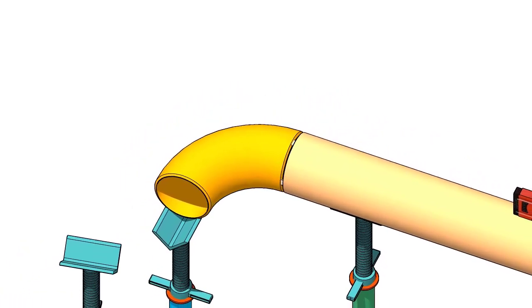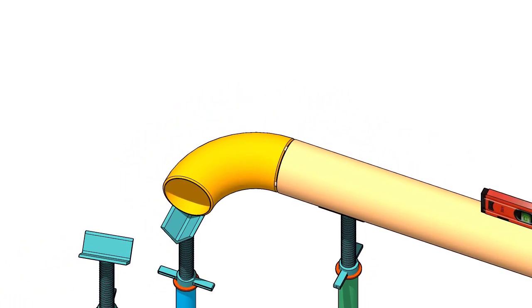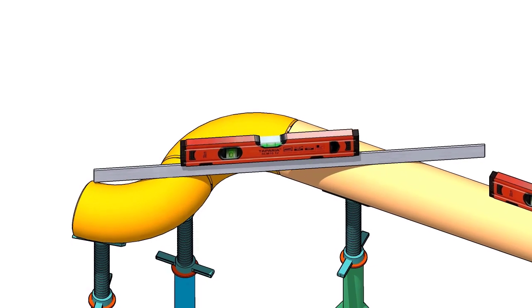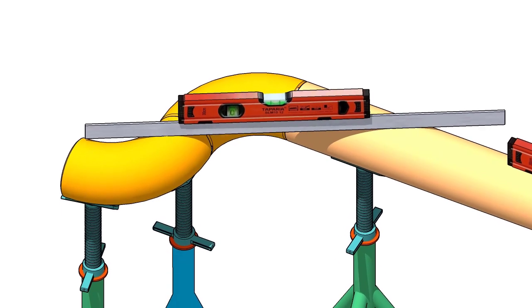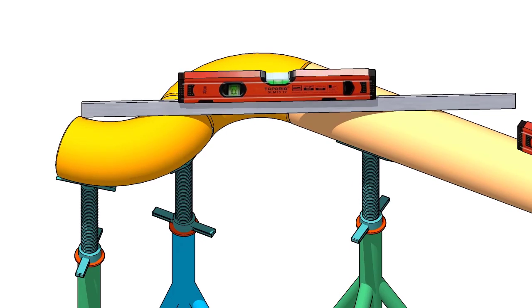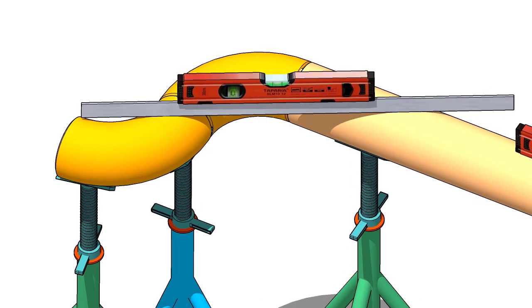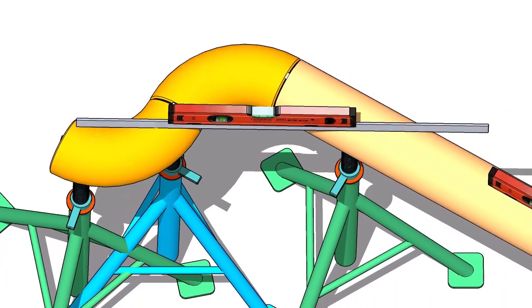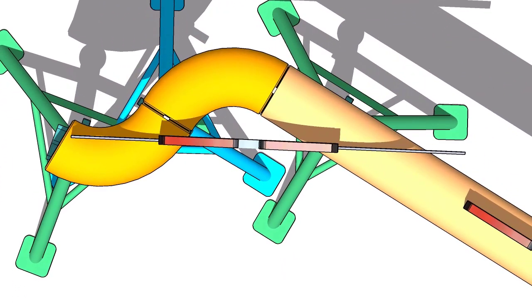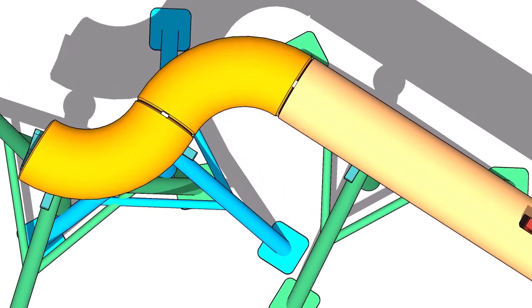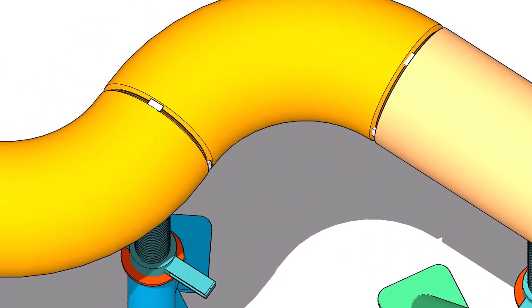Put the elbow on the stand and check the level, use a straightedge and a spirit level. Check the face level of the elbow, tack weld on the top and the bottom.